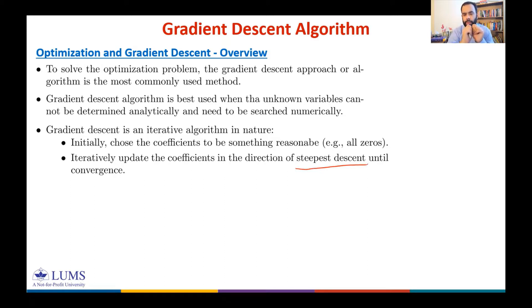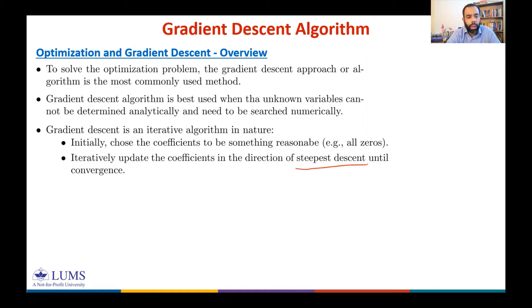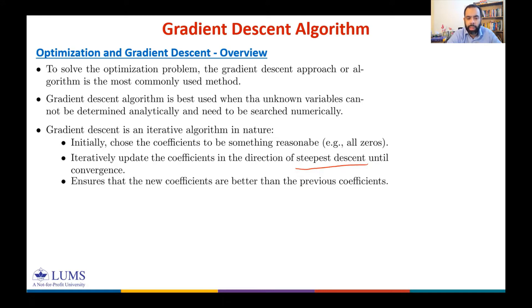We choose some initial coefficients and keep updating them so that we move towards either a local or global minimum. We keep iterating until convergence is reached — which can be defined as reaching the local minimum, or when the error is no longer reducing. With each update, we ensure the new coefficients are better than the previous ones.